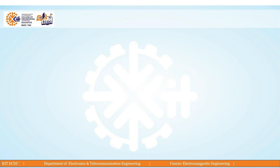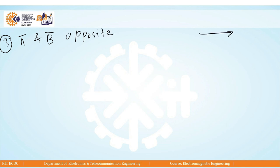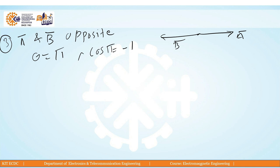Our third case: if two vectors, vector A and vector B, are opposite to each other — this is my vector A and this is my vector B — the angle between these two is π or 180 degrees. Since cosπ = −1, the result of the dot product A-bar dot B-bar is equal to −AB.